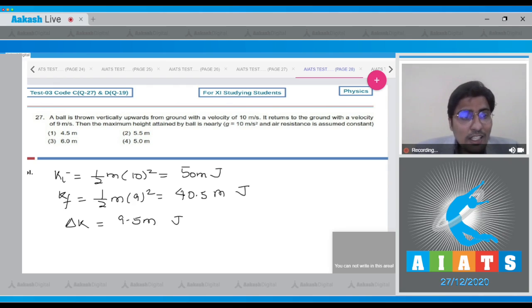Now, the loss of energy in one way, dear student, will be equal to 4.75 m into j. So this is loss of energy in one way.